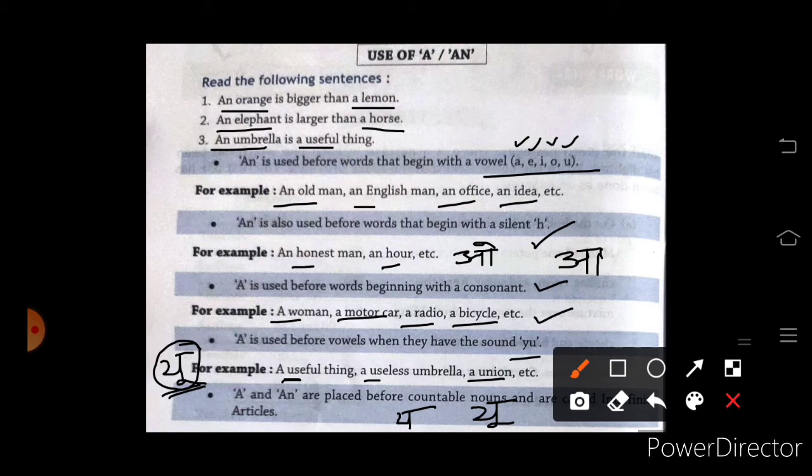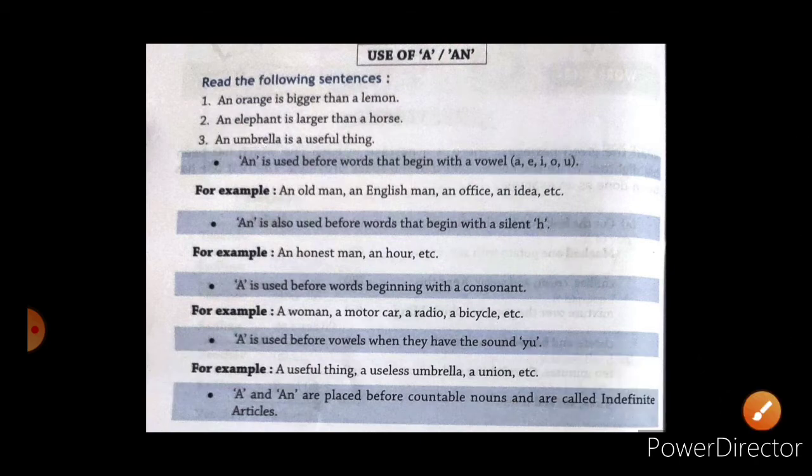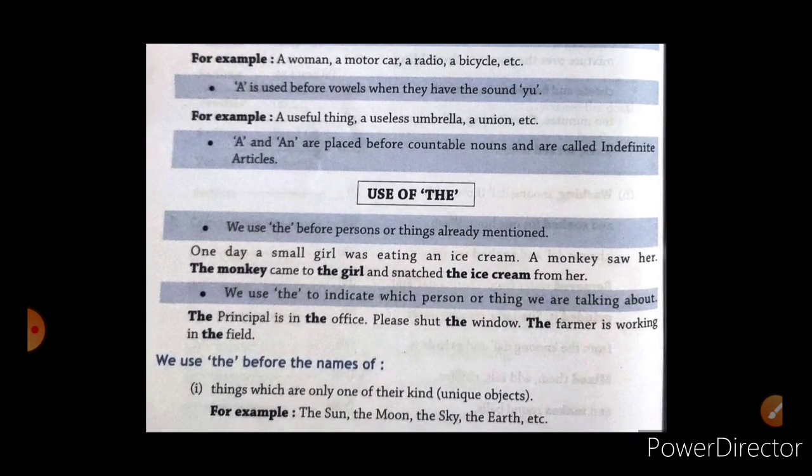A and an are placed before countable nouns and are called indefinite articles. Now, moving to next, use of the.